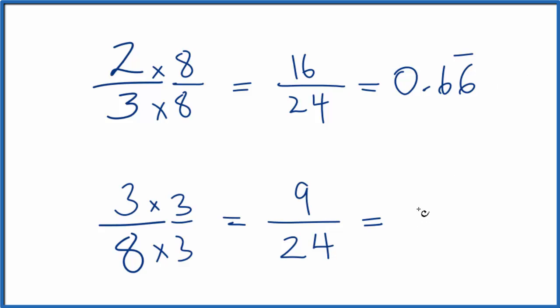So let's just give ourselves another digit here. And we can see that 0.666 is bigger than 0.375.